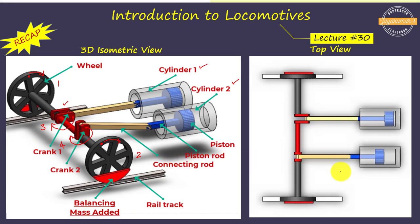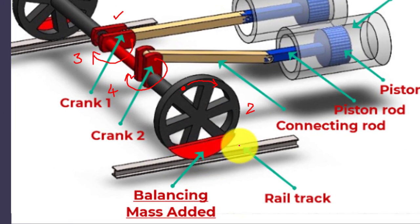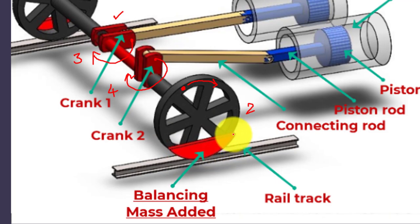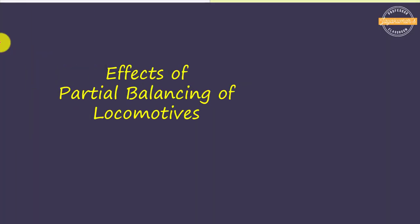This is the top view. You can see here that the cranks are at 90 degrees with each other, which allows easy starting of the engine. After the due process, the obtained balancing mass is usually added on the rim of the driving wheels.